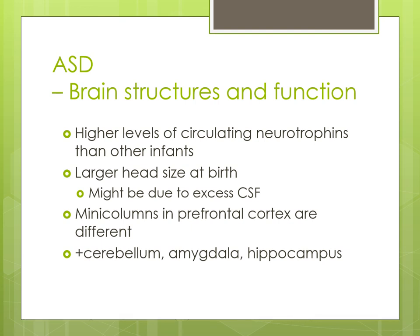The mini columns in the prefrontal cortex are different in people with autism spectrum disorder — they have the same number of neurons within each mini column, but there is reduced size between the mini columns themselves. This may explain why individuals with autism analyze details intensely and get very focused on their interests. There are also differences in the cerebellum, the amygdala, and the hippocampus.